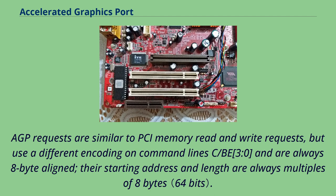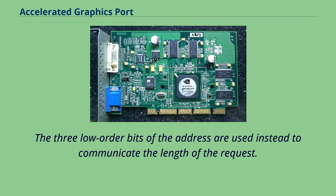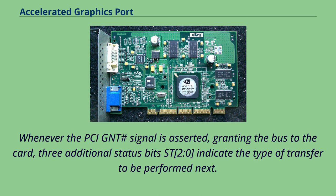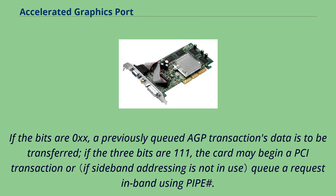AGP requests are similar to PCI memory read and write requests, but use a different encoding on command lines CB[3:0], and are always 8-byte aligned. Their starting address and length are always multiples of 8 bytes. The three low-order bits of the address are used instead to communicate the length of the request. Whenever the PCI GNT# signal is asserted, granting the bus to the card, three additional status bits ST[2:0] indicate the type of transfer to be performed next. If the bits are 0XX, a previously queued AGP transaction's data is to be transferred. If the three bits are 111, the card may begin a PCI transaction or queue a request in-band using PIPE#.